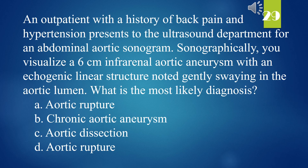An outpatient with a history of back pain and hypertension presents for an abdominal aortic sonogram. Sonographically, you visualize a 6 cm infrarenal aortic aneurysm with an echogenic linear structure noted gently swaying in the aortic lumen. What is the most likely diagnosis? A. Aortic rupture. B. Chronic aortic aneurysm. C. Aortic dissection. D. Aortic rupture. The answer is C. Aortic dissection.